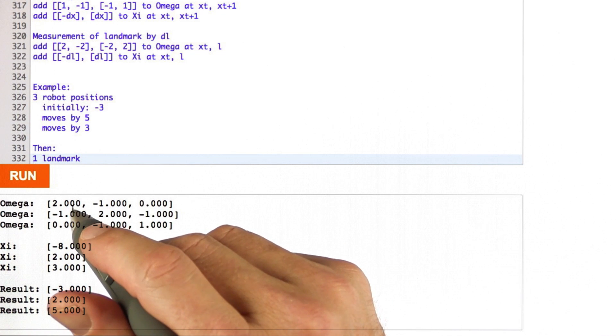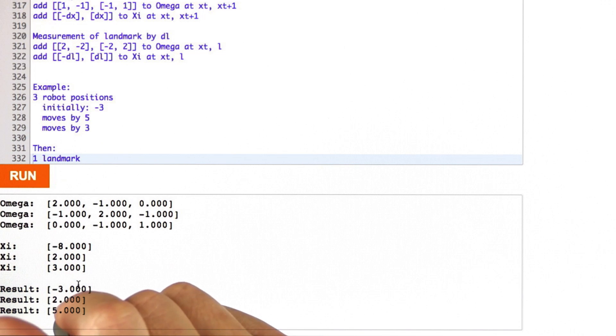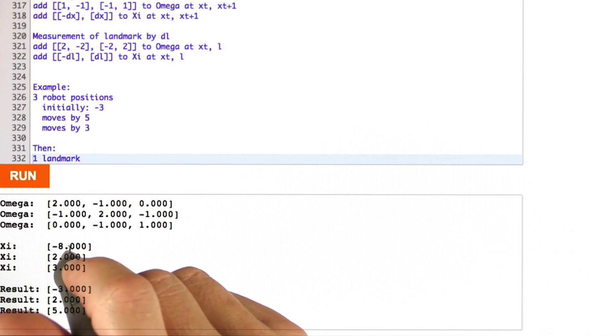So what I want you to do is write code that incrementally, step by step, constructs the omega vector and the xi function, and then returns to me those results over here. There's an empty function in your code that accepts as parameter the initial position, minus 3, and the two motion values 5 and 3.